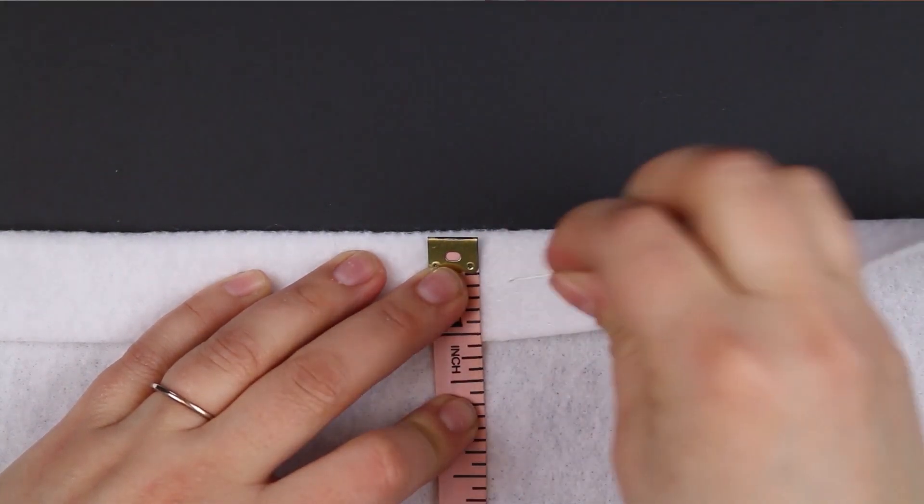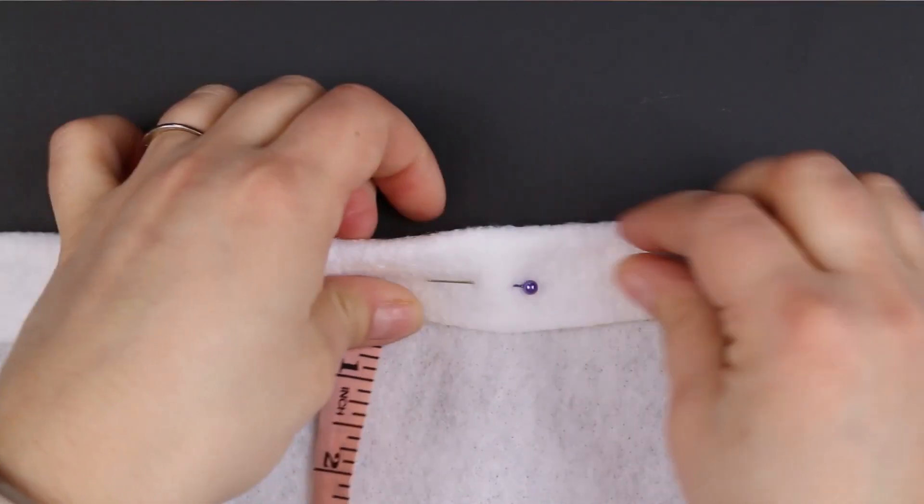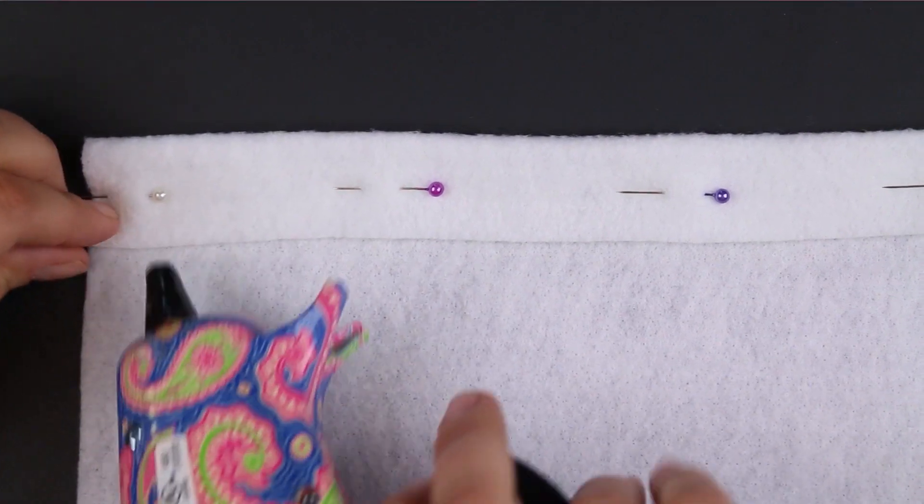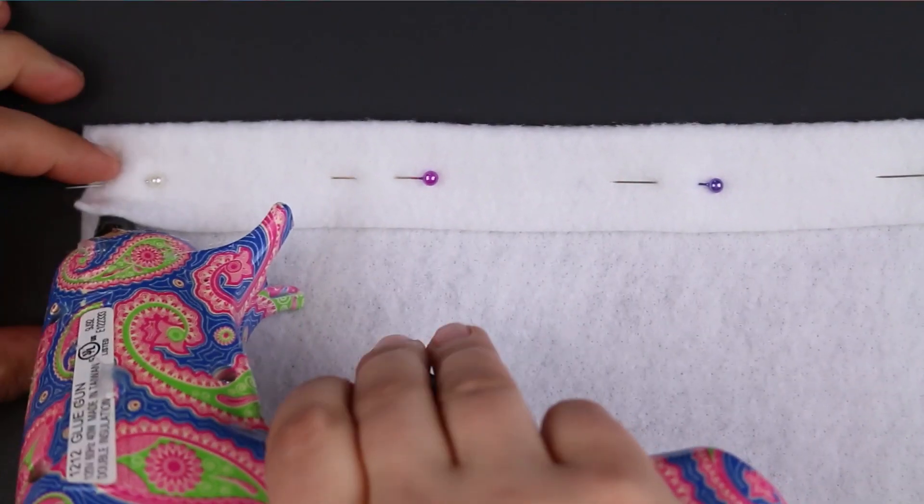Don't worry, we're not going to be sewing. Pin down the entire length of the piece of felt and then warm up your hot glue gun.